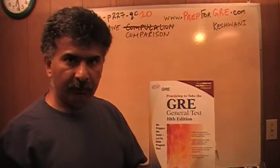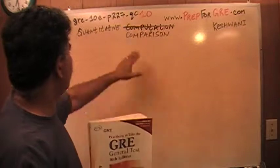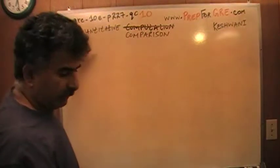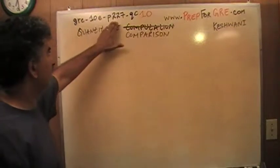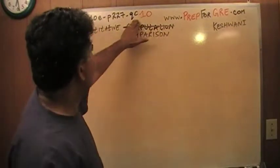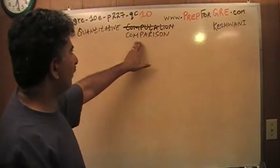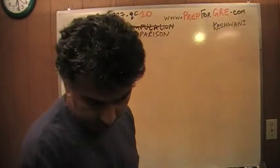The problem that I'm about to solve is the one that you're going to find on page number 227. The tag that I use is GRE-10E for the 10th edition. Page 227, quantitative comparison, hence the QC, number 10. Let's take a look at it.